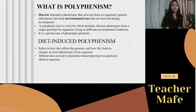Polyphenism is when there is a development of multiple phenotypes — many phenotypes that arise in a single genotype — and that is due to differences in their environmental conditions. There are different types of polyphenism, but today's discussion will focus on diet-induced polyphenism.